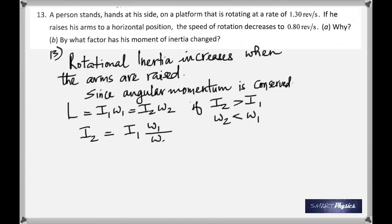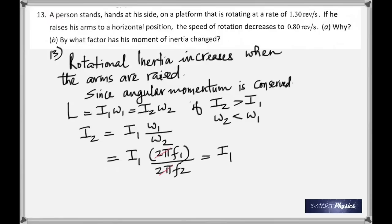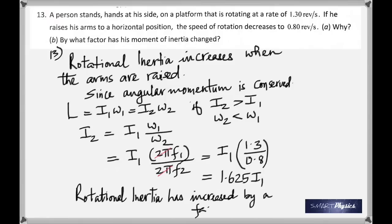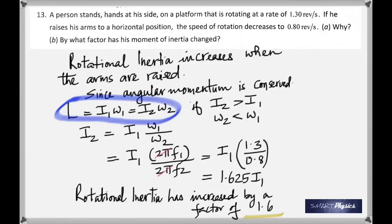By what factor has his moment of inertia changed? I₁ω₁ = I₂ω₂, so I₂ = I₁ × (ω₁/ω₂) = I₁ × (f₁/f₂). The 2π's cancel, giving I₂ = I₁ × (1.30/0.80) = 1.625 I₁. So the rotational inertia increased by a factor of approximately 1.6.